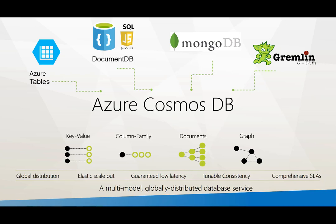For Neo4j, for instance, that's another graph database engine. They have a different type of language called Sparql, but here Gremlin is the supported open source language. If you look at graph, you've got Neo4j and also Cassandra — those capabilities are available in the cloud, including in Azure, but as infrastructure as a service, not as a platform as a service.